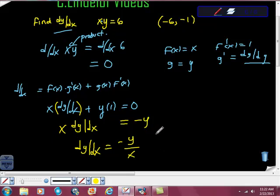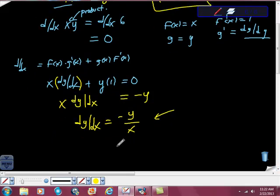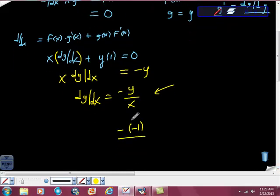So there's my implicit derivative. Now we're asked to find the derivative when we have the point negative 6, negative 1. I'm going to fill that in. This negative sign is this one. The y value provided was negative 1, and the x value was negative 6. Therefore, we get an answer of negative 1 sixth.